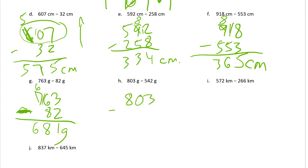Eight hundred three. This is the hardest thing to do — three-digit subtraction with a zero in the middle. Zeroes make everything a little more difficult. But we are not going to subtract up. Three minus two is one. Zero minus four — we can't do that, so we need to get some tens. We don't have any, so we break up one of these hundreds. We'll have seven hundreds left and ten tens from that. Ten tens minus four tens is six tens. Seven hundreds minus five hundreds is two hundred. These are grams.